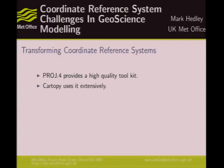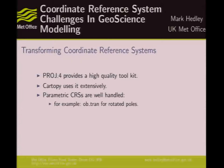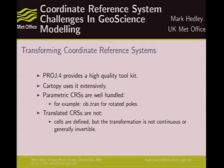I've talked quite a bit about transforming coordinate reference systems — that's one of the key requirements we're being presented with. We use Proj4 extensively; we've written a Python library which hooks into Proj4 and connects it to the matplotlib plotting library. That provides a really useful set of tools for handling our rotated pole grids. There's an ob_tran function in Proj4 which does everything we need for the rotated poles. But when it comes to these translated coordinate reference systems, we're not aware of how to do this, and I'm not yet convinced it's the right approach. That's one of the reasons I've come here — to get opinions: is this a good idea, or a whole world of pain?